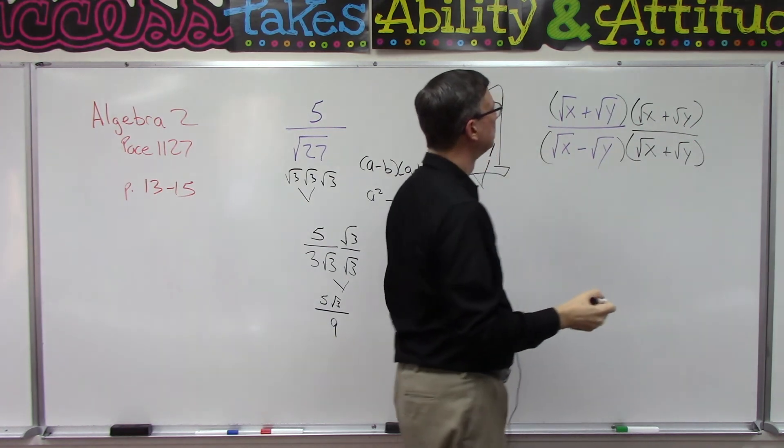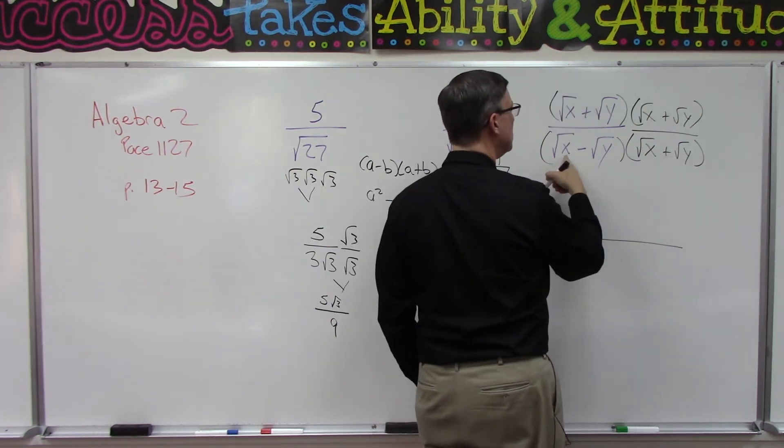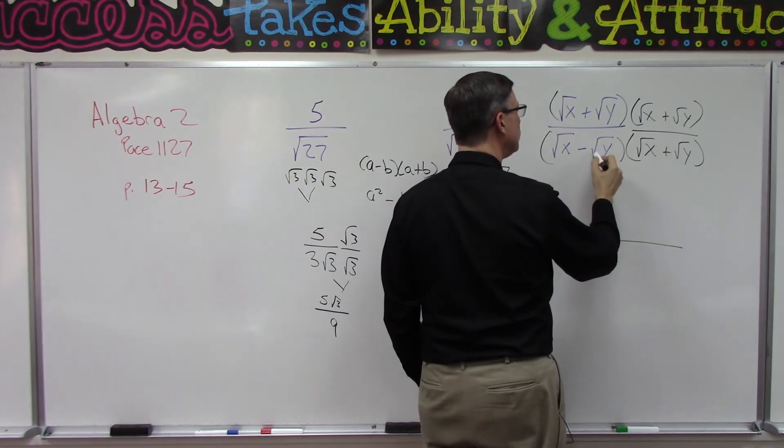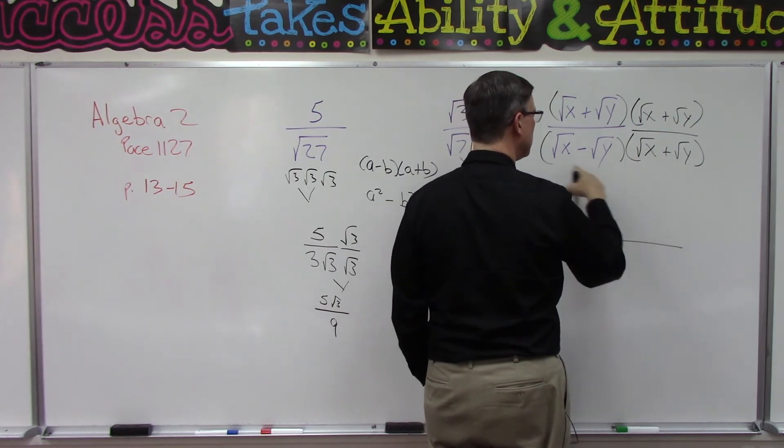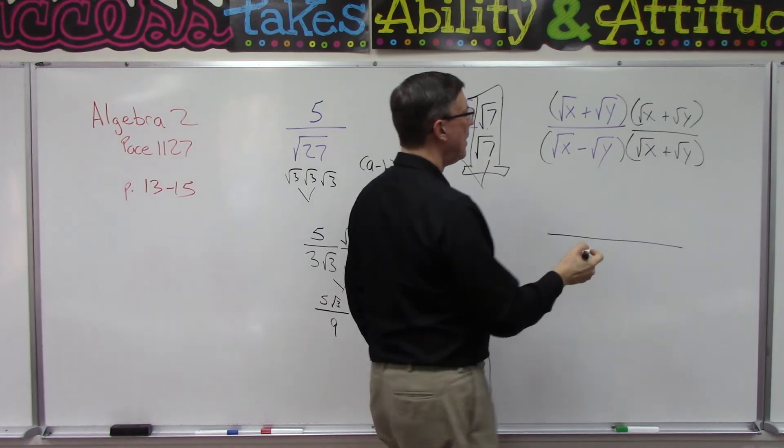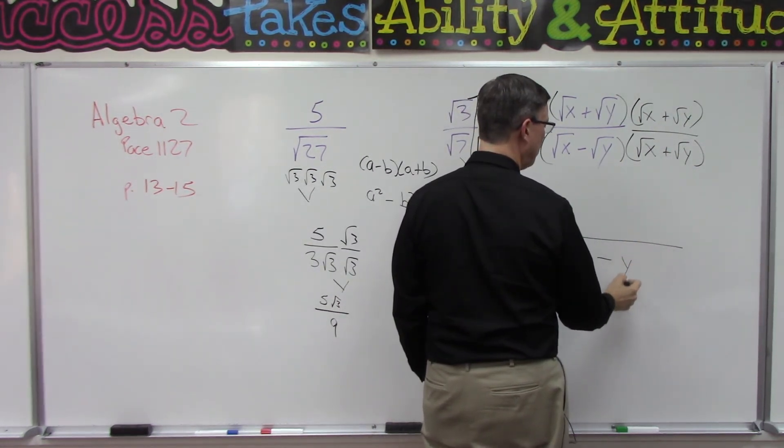Let's look at what happens with the bottom here first. The square root of x times the square root of x—the x pops out. This would be the square root of xy with a negative, and then positive square root of xy, so those two are going to cancel out, minus square root of y times square root of y, so the y pops out.